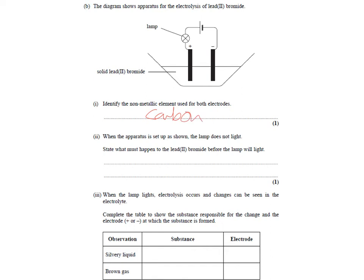And the reason the lamp doesn't light is because, well, alarm bells. We've got solid lead bromide. Because what must happen for the lead bromide before the light will light? So, you have to melt the PbBr2. And that will work because the ions, therefore, are able to move between the electrodes and carry the electrons in the correct place.